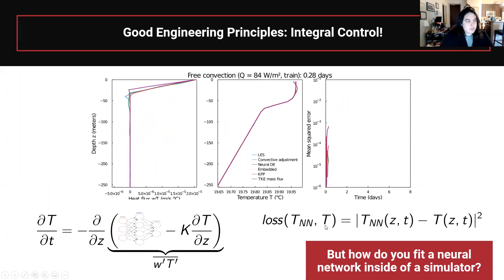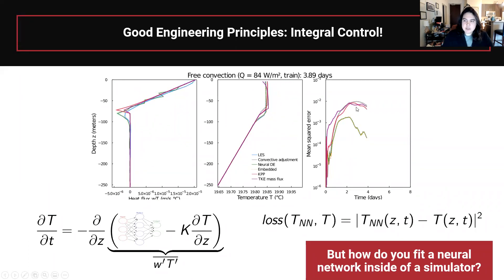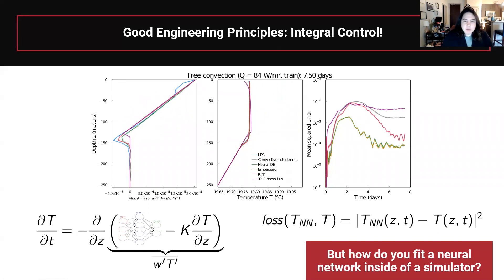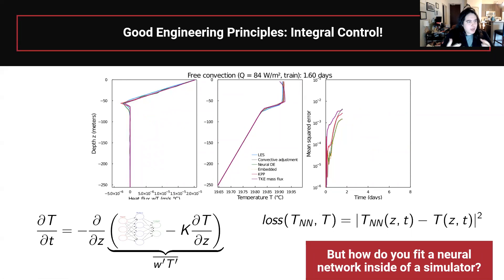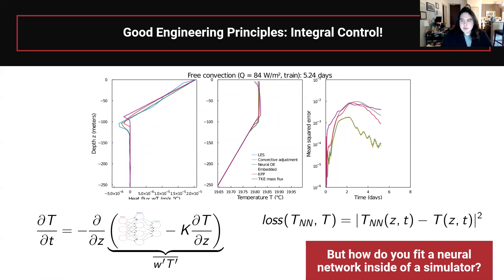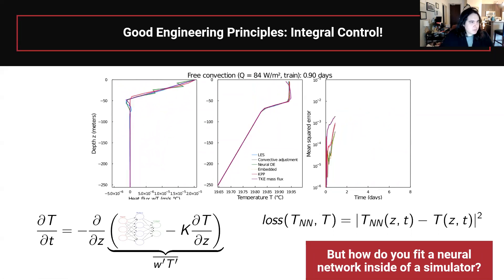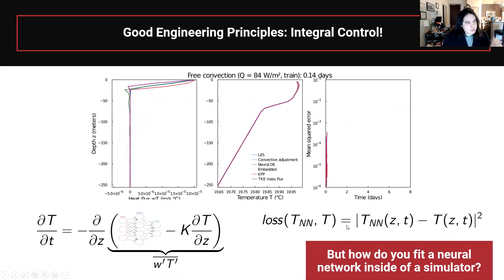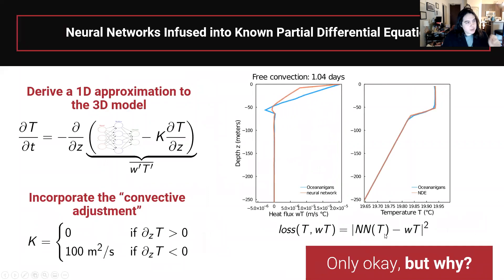When you train with integral control — writing the loss on the solution of the differential equation rather than on the fluxes — the neural network-informed version is actually better at predicting than all other parameterizations. This is what we're building into the Caltech plus MIT climate model. The key insight is that the loss function must be written on the solution to the differential equation, not on the neural network in isolation. So how do you train a neural network embedded within a partial differential equation?